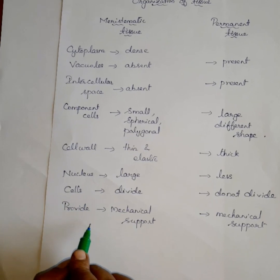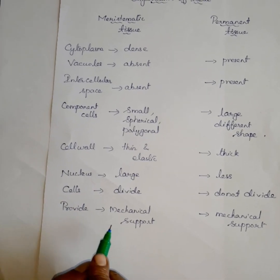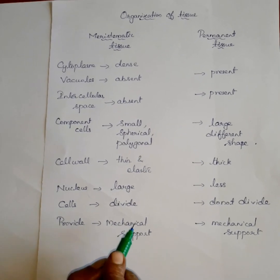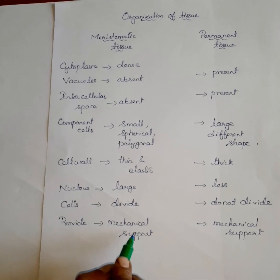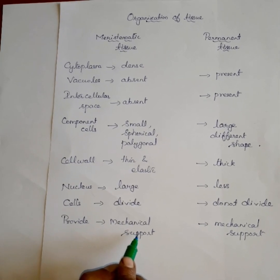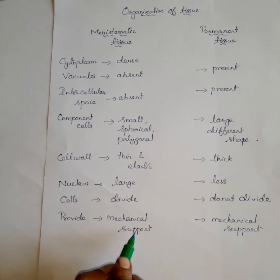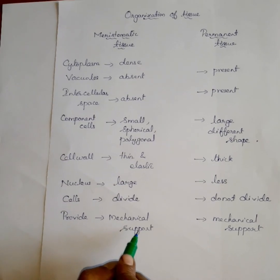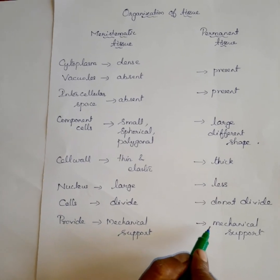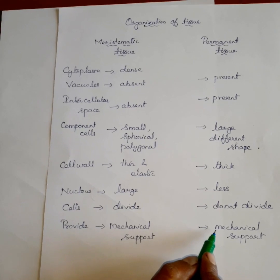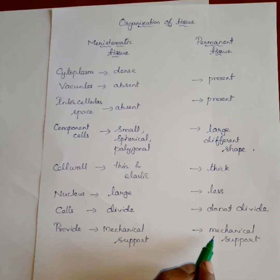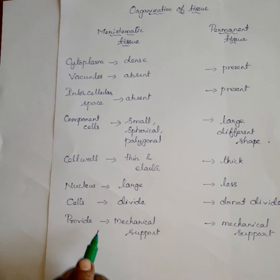Meristematic tissue provides growth to the plant. Permanent tissue provides mechanical support and elasticity to the plant body. Meristematic tissue is involved in growth and development of the plant body, while permanent tissue provides only mechanical support.